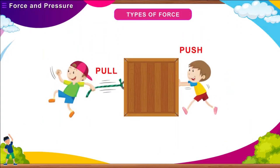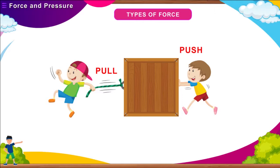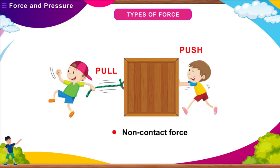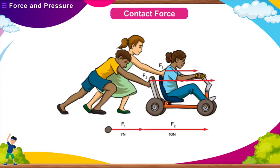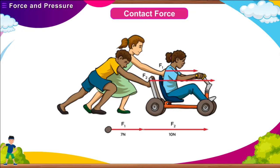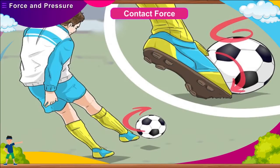When force acts on an object, it experiences a push or pull. There is a necessary interaction between objects for the force to act. The moment this interaction ceases, the force also ceases. This interaction between objects may be due to contact force or non-contact force. When force acts between two objects that are in physical contact with each other, the force is said to be a contact force. For example, when a footballer kicks a ball with his leg, the ball and the leg are in contact — thus it is a contact force.